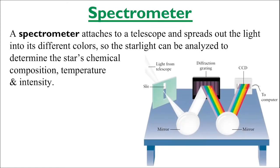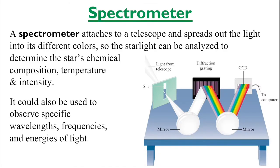All of the spectra that we have seen so far most likely were produced using a spectrometer. A spectrometer is a multi-piece instrument that attaches to a telescope and spreads out the incoming light into its different colors so that the starlight can be analyzed to determine the star's chemical composition, temperature and intensity.